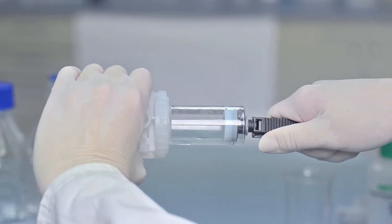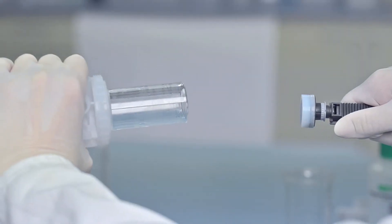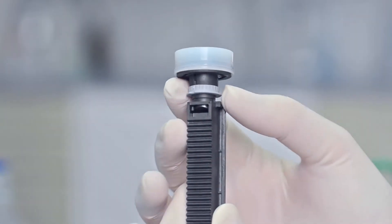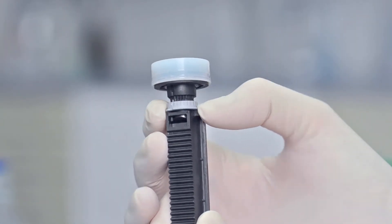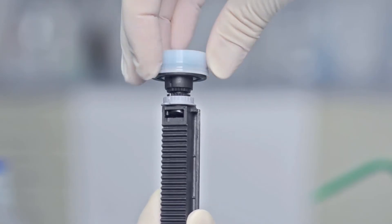Then pull the piston rod and attached piston out of the dispensing cylinder. Slide the light grey safety ring of the piston rod downwards, then unscrew the piston.